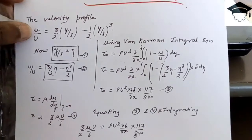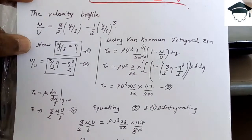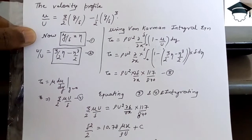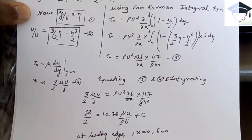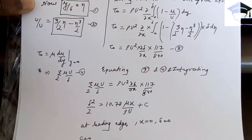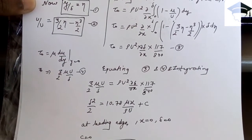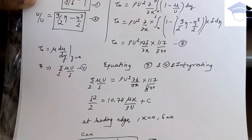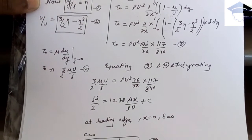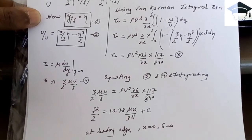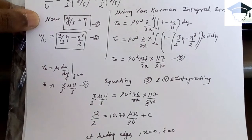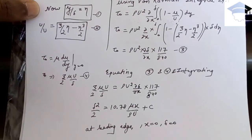Also, τ₀ = μ(du/dy) at y = 0. Substituting the values from the above velocity profile, we get τ₀ = (3/2)(μU/δ), where μ is the dynamic viscosity, U is the free stream velocity, and δ is the laminar boundary layer thickness. This is equation number 4.